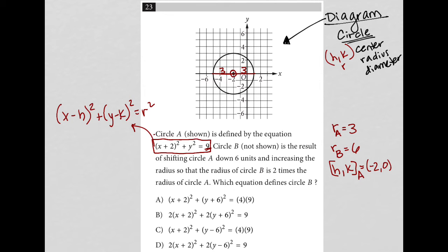And we're told that circle B is being shifted down 6 units, which means the center or h k for circle B, the x value isn't changing because it's not shifting left or right, so that's still negative 2, but the y value is changing because we're shifting down, so instead of a 0, this will be a negative 6.